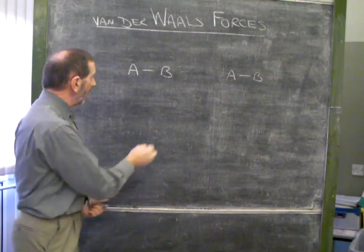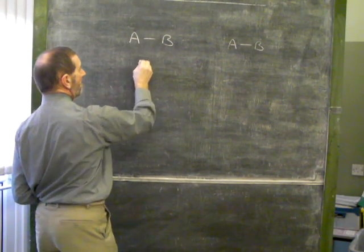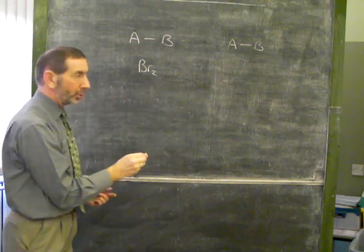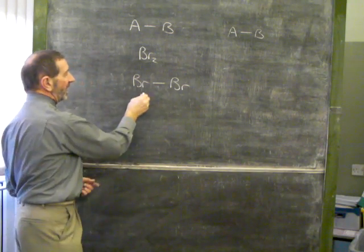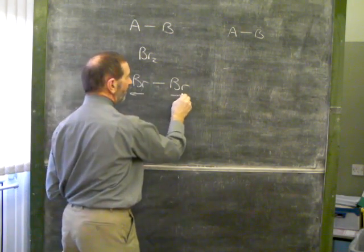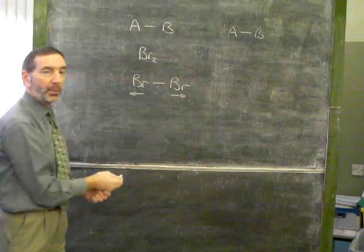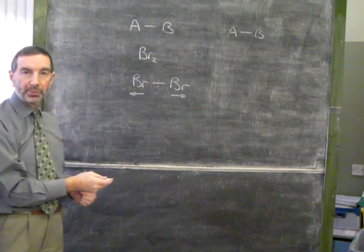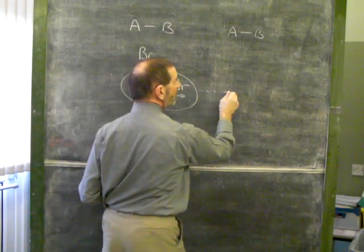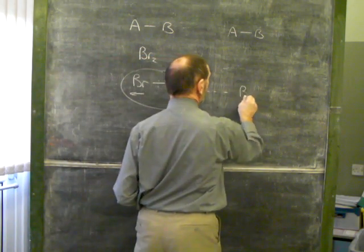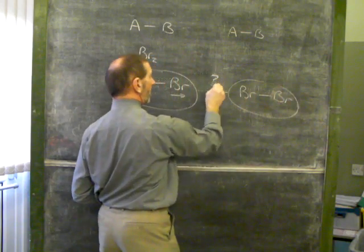Where's the evidence? Well, let's think of a molecule which has no charges. Take a molecule, for example, like bromine, Br2, made from two identical bromine atoms. They have identical electronegativities, and therefore the electrons are evenly shared, and the molecule is non-polar. But there must be bonds between bromine molecules, because bromine is a liquid. And the only way that bromine can be a liquid is to have intermolecular bonding. So what's the source of these intermolecular bonds?